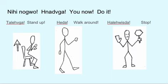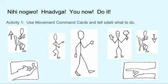Talehaga — Stand up. Heda — Walk around. Halewista — Stop. Nihihnogui. Nadaga. Nihi. Nigada. Nidadaga — Now all of you do it. Use the movement command cards and tell Stali, your friend, what to do.